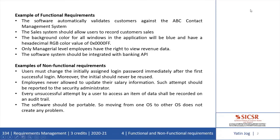Looking at examples of functional requirements: the software automatically validates customers against a contact management system; the sales system should allow users to record customer sales; the background color for all windows in the application will be blue with a specified hexadecimal RGB color value. These are observable behavioral items. Also, only manager-level employees have the right to view revenue data — that is an access privilege and a functional requirement. The software system should be integrated with a banking API — that is an integration requirement and a functional requirement.